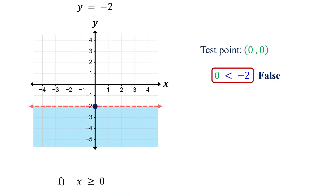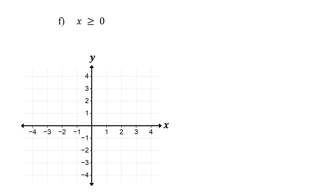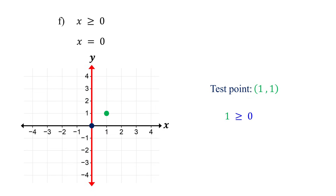What if the boundary line is vertical? You still need to follow the same steps. The graph of x equals 0 is a vertical line crossing the x-axis at 0. Since the inequality is greater than or equal to, use a solid line. Next, pick a test point that is not on the line to determine which region to shade. You can use the point 1 comma 1. Substituting it into the inequality gives 1 greater than or equal to 0, which is true. So shade the region that contains the test point. That's your graph.